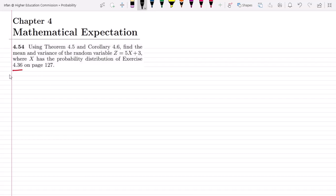We already solved question 4.36 and found that the expected value of X was 1 and the variance of X was also 1. This is what we previously found from that question.